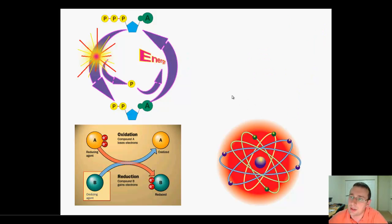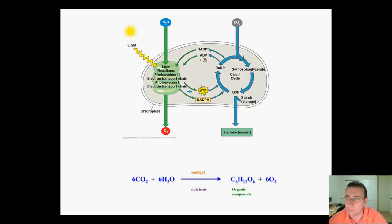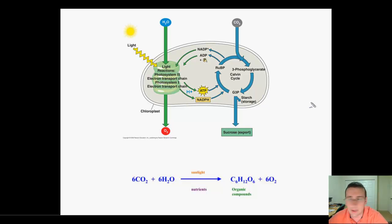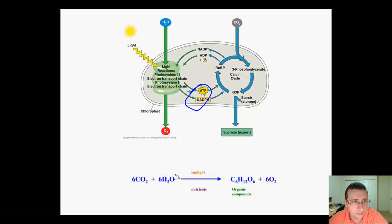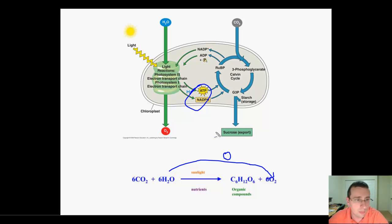Photosynthesis happens in two steps: the light reaction and the light-independent reaction. In the light reaction, it involves two photosystems — photosystems two and one — as well as electron transfer chains. What's happening in the light reaction is that the energy of the sun powers the transference of electrons from water into electron carriers. Water loses electrons and therefore becomes oxidized back to oxygen. When that happens, you actually split water to make oxygen.